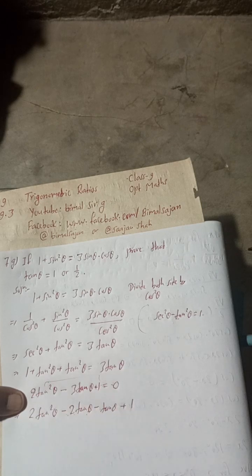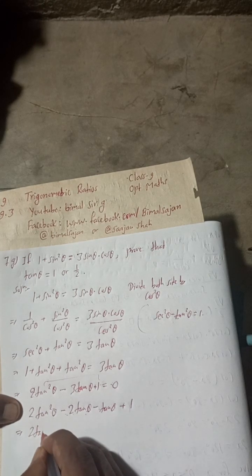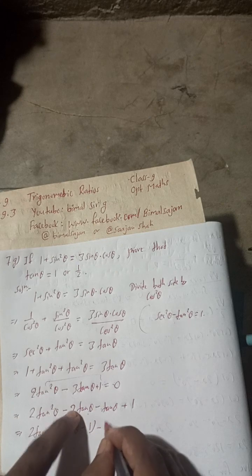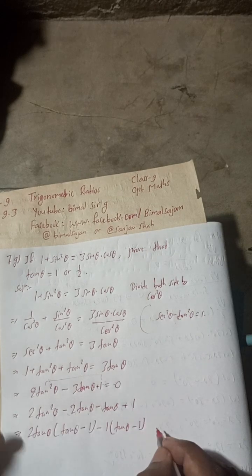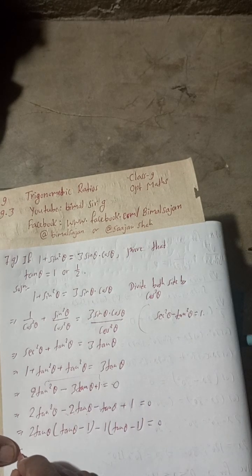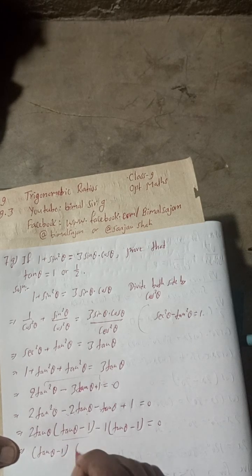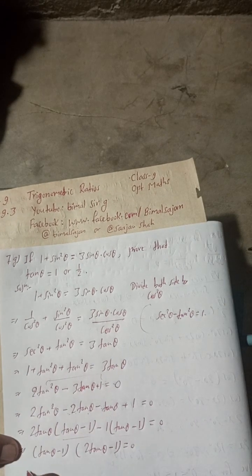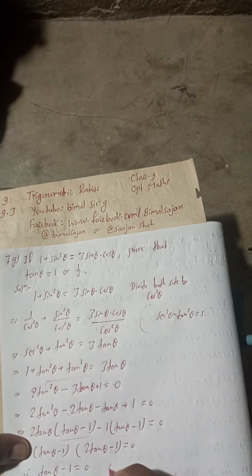Now group and factor: take 2tanθ common from the first two terms, giving 2tanθ(tanθ minus 1), and take negative one common from the last two terms, giving minus one(tanθ minus 1). So we get: (tanθ minus 1)(2tanθ minus 1) is equal to zero.